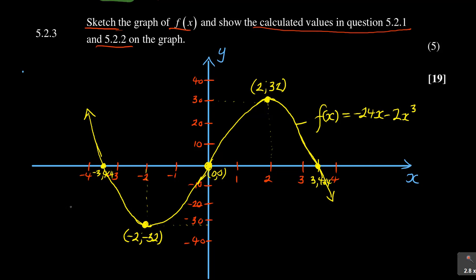The coordinates of the turning points and the x and y intercepts are the key things to identify when sketching a cubic graph. I cover this in detail in the book Mathematics entry for the underdogs, which also comes with videos to make it easier to understand. You can see it was five marks and the graph was not difficult to plot. We have come to the end of question number five — check question number six to see how the last question ends. Thank you.